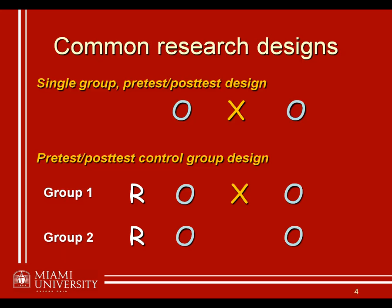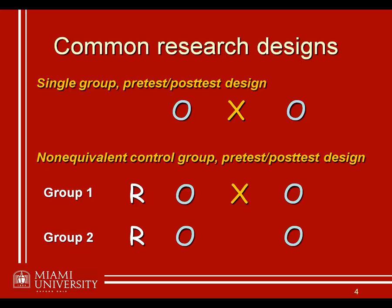Again, without random assignment it would be a non-equivalent control group, still a pre-test post-test design, but similar to the previous slide where groups aren't guaranteed equivalent by random assignment. However, we still have the benefit of the pre-test measure to identify whether these groups are similar before introducing the manipulation. So this is definitely much stronger than the non-equivalent control group post-test only design we discussed before.